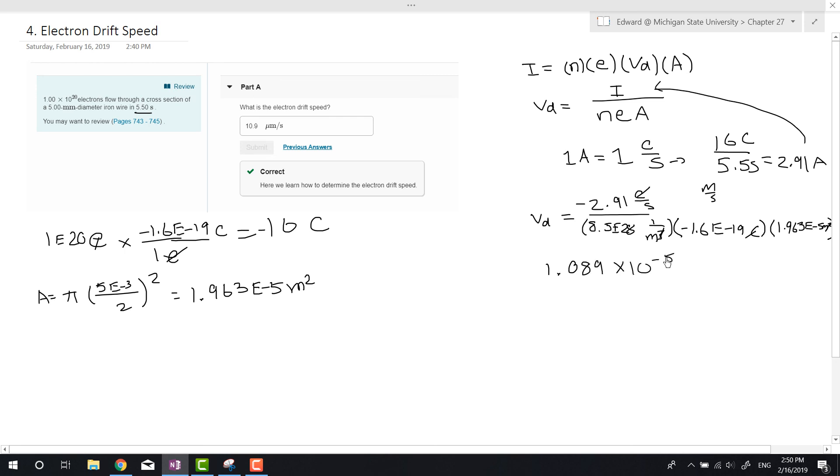So we can get this in micrometers, which is what this is in. We can just multiply by 1 e to the sixth. So if we did that, we'll get 10.89 or 10.9 micrometers per second, which is in fact the answer they have here.